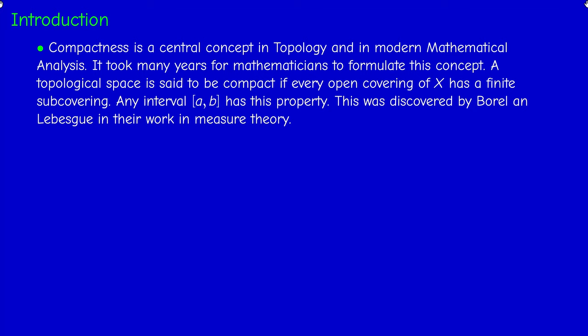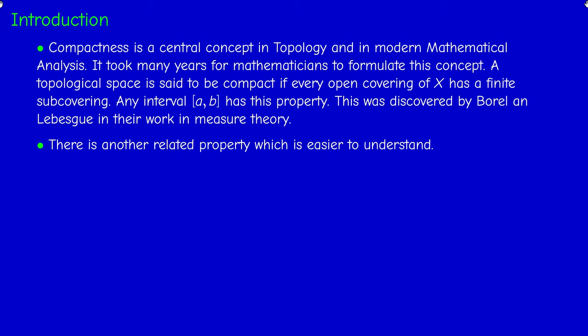There is another related property that is easier to understand, which you probably saw in first year — it's equivalent to what we call the Bolzano-Weierstrass theorem. This states that any sequence in a closed interval [a,b] has a convergent subsequence, or equivalently any bounded sequence has a convergent subsequence, where the limit is in the set because it is closed.